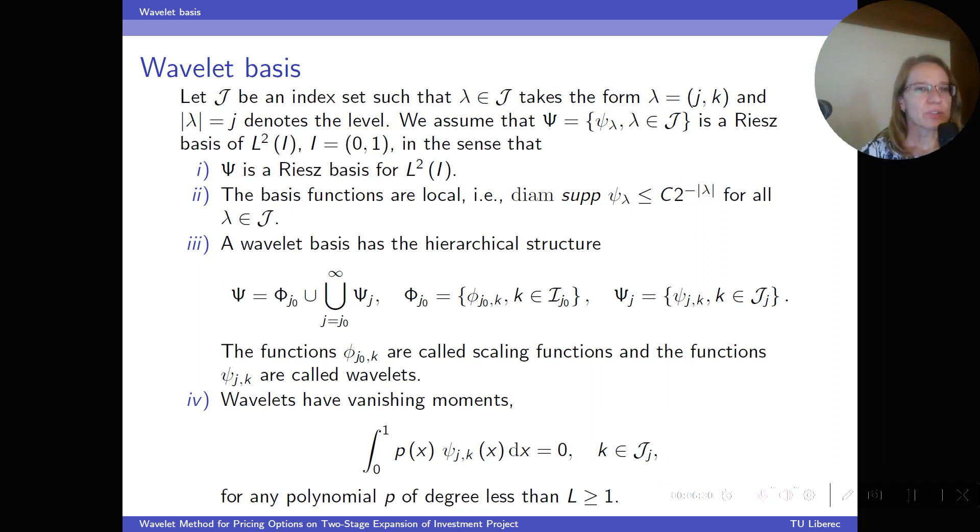As already mentioned, we want to develop a wavelet method. Therefore we need a wavelet basis, which is a set psi on the interval [0,1], which satisfies these four properties. It is a Riesz basis. The basis functions are local. The basis has hierarchical structure and consists of some functions on the coarsest level called scaling functions and functions on various levels called wavelets. And the last assumption is that wavelets have vanishing moments.